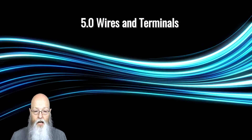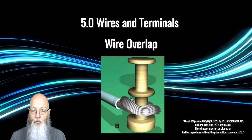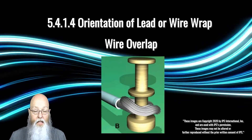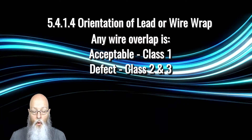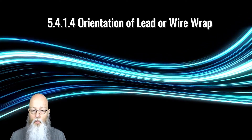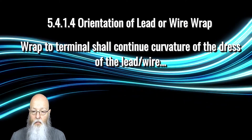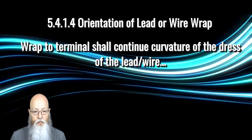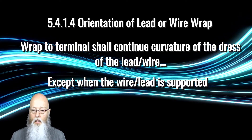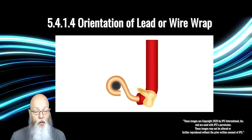Moving to paragraph 5 and the wires and terminals connections: a general note for Section 5, Wire Overlap — where the wire wraps the terminal more than 360 degrees and overlaps the previous wrap — has been removed from the individual terminal criteria. Instead, there's a general statement in 5.4.1.4 that states any wires that cross over or overlap themselves or other wires is acceptable for Class 1, but is a defect in all cases for Class 2 and 3. There is also an exception for wire wrapped opposite to the wire dress. The leader wire shall continue the curvature of the dress of the leader wire. If the wire is wrapped in the opposite direction, then it is acceptable for Class 1, a process indicator for Class 2, and a defect for Class 3, except when the wire or terminal connection is supported to prevent stress at the solder connection. The addition of staking or some other form of support means that the wire wrap direction is optional as long as the wire is supported.